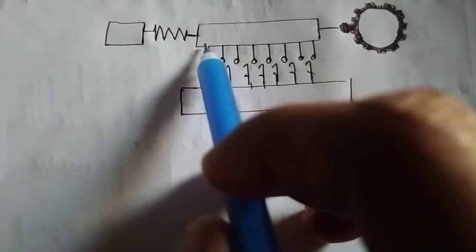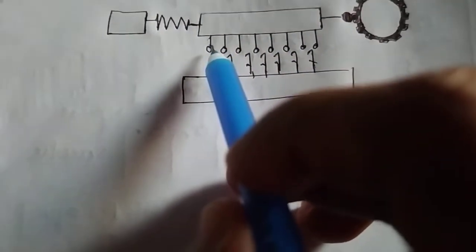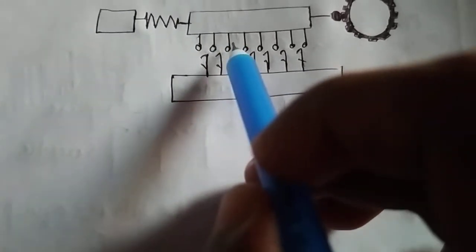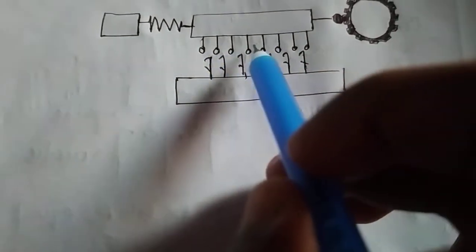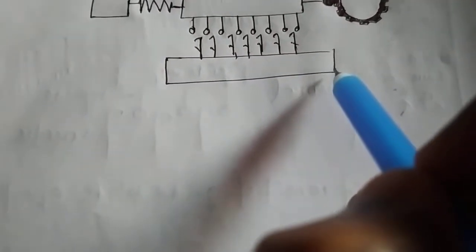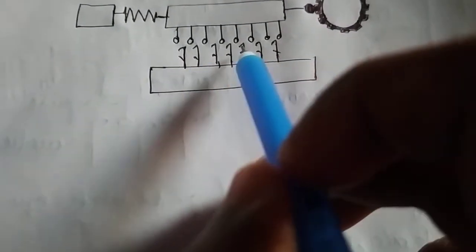This over here is the guide bar, and this is the guide unit or guide blades, which consist of metal. This over here is the needle, and it's placed in the needle bar.